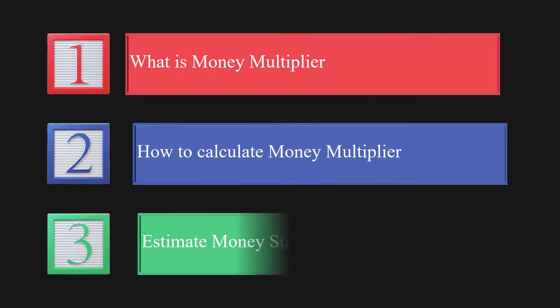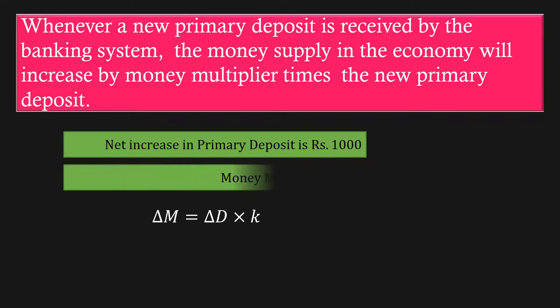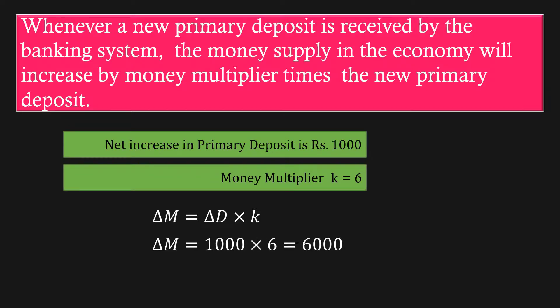Estimate money supply. Assuming net increase in primary deposit is 1,000 rupees and money multiplier K is 6, we shall calculate the increase in money supply. ΔM = 1,000 × 6 = 6,000 rupees. The net increase of 1,000 rupees in primary deposit increases the money supply to 6,000 rupees. Thus, the money multiplier helps us calculate the extent of expansion in money supply due to a net increase in primary deposit.